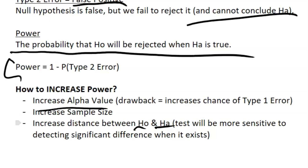Increasing the distance between null and alternative values makes the test more sensitive to large changes and better at detecting significance. For example, null and alternative values of two and three are close and hard to distinguish, versus two and 100, which are far apart. That covers all the content you need to know for Unit 6.